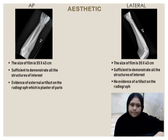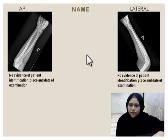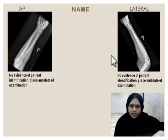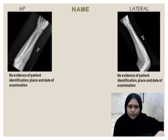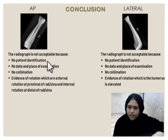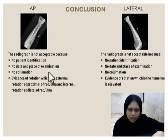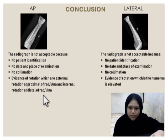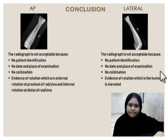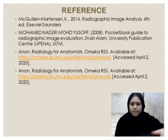For patient name: for AP projection, there is no evidence of patient identification, place and date of examination. For lateral, there is no evidence of patient identification, place and date of examination. Conclusion: for AP, the radiograph is not acceptable because there is no patient identification, no date and place of examination, no collimation, and there is evidence of rotation. That's all from me, thank you.